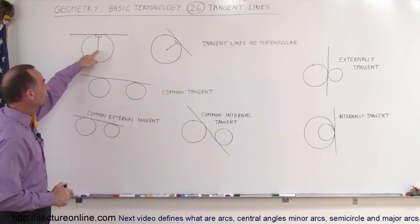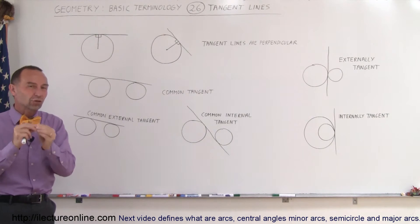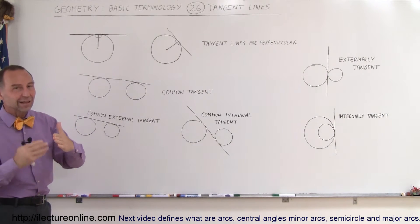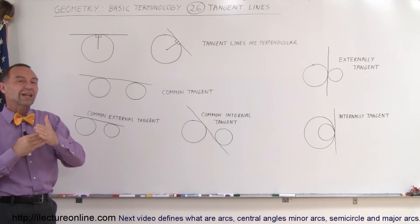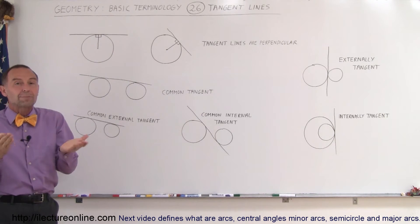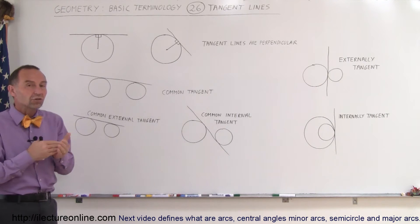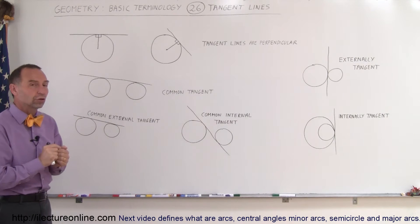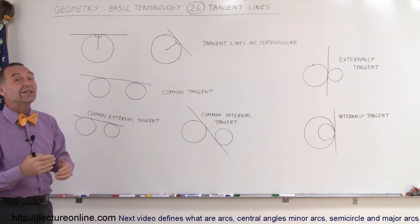When we draw a line from the center of the circle to the point that the tangent line and the circle have in common, that line — the tangent line — and the line from the center to the edge of the circle meeting up with the tangent line will be perpendicular to one another. So tangent lines are perpendicular to the circle at the point where they touch, and perpendicular to the line drawn from the center to the edge of the circle where they meet, which is also called the radius of the circle.